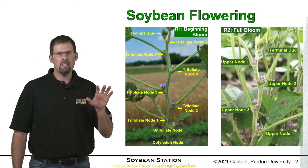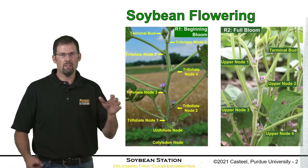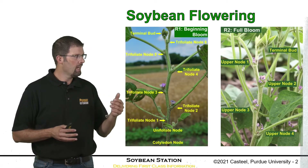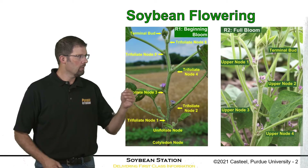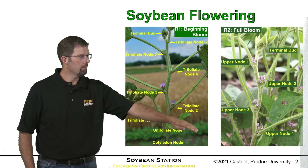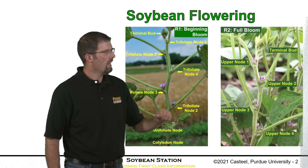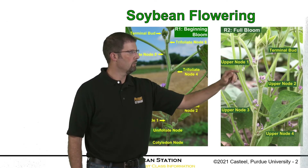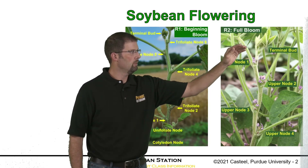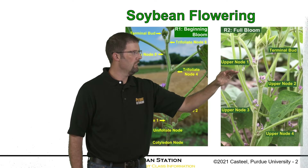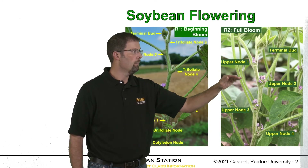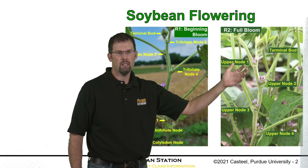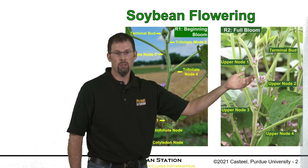As we advance to the second stage of this pairing of reproductive development — flowering — this is where we have open flowers up the main stem, and now it's on the upper two positions. Going to the top, we have the terminal bud, upper node position 1, upper node position 2. Both in this case have an open flower, and so this would be classed as R2, or full bloom.